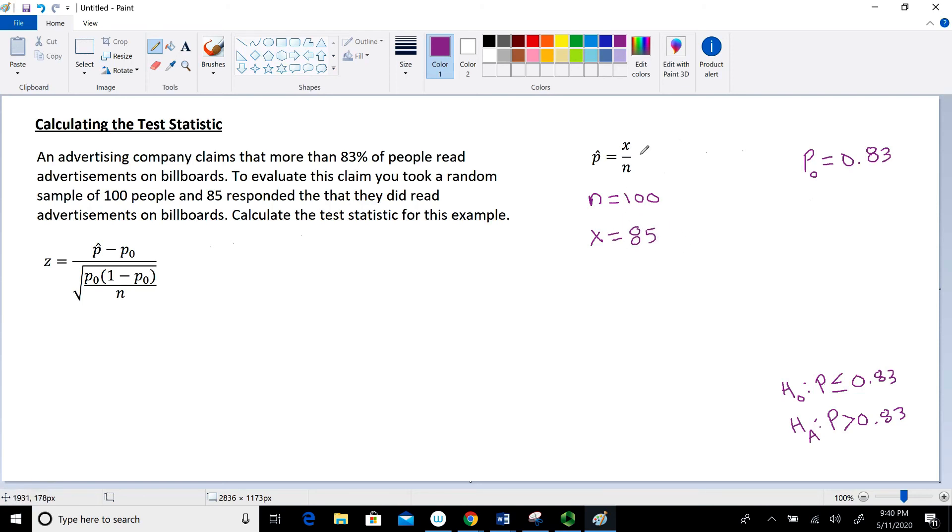So now we have X and N. And we can use this information to calculate our sample proportion. So that's going to be equal to 85 over 100. Which if we do the division on that, that ends up being 0.85 for our sample proportion. So that's the first step is calculating our sample proportion.